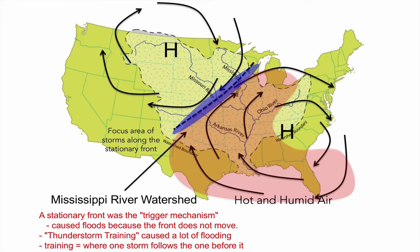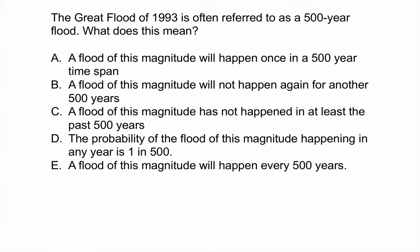The stationary front is a front where we get a lot of flooding because it doesn't move. Now I called it a 500-year flood — what does that mean? Does it mean it happens once every 500 years, won't happen again for 500 years, hasn't happened in 500 years, or that the probability is 1 in 500 in any given year? The answer is D: it simply means the probability of a flood of this magnitude is 1 in 500. So you can have back-to-back 500-year floods — they can happen a week apart. It's a probability. In fact, South Carolina had back-to-back-to-back 500-year floods over three years in the 2010s.